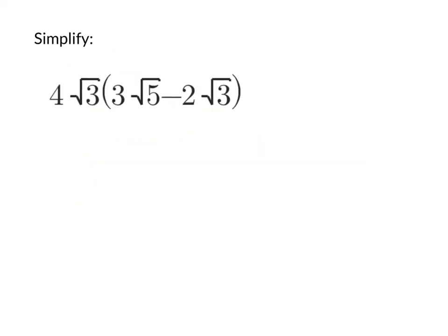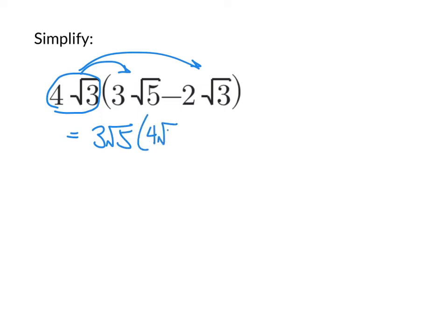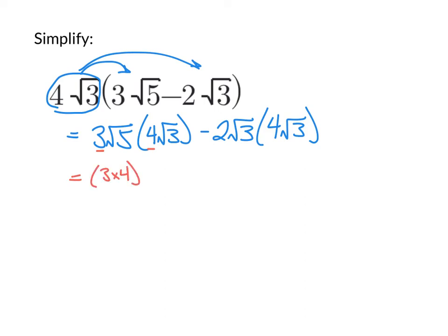Let's try one more — the idea is still the same. We have 4√3 getting distributed inside the parentheses to each term. That means 3√5 gets multiplied by 4√3, and minus 2√3 also gets multiplied by 4√3. Within each product, we multiply the two numbers outside the square root: 3 times 4, and underneath the square root we take the radicands 5 and 3 and multiply them together.